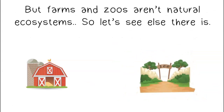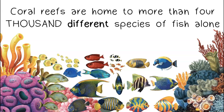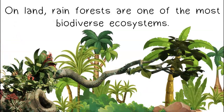But farms and zoos aren't natural ecosystems, so let's see what else there is. Coral reefs have more biodiversity than any other aquatic ecosystem. Coral reefs are home to more than 4,000 different species of fish alone. On land, rainforests are one of the most biodiverse ecosystems.